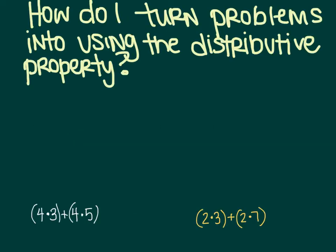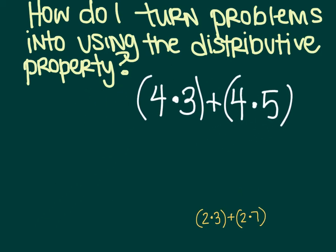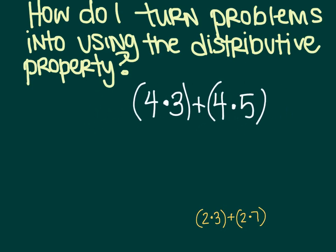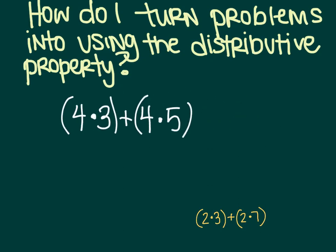How do I turn problems into problems using the distributive property? So what the distributive property is, is it's using multiplying and adding. So here we have a problem with multiplying and adding. Four times three plus four times five. And we're going to make it look like the distributive property, because right now it doesn't. What you're going to do is find the number that is repeated in both parentheses. So here I have a four and a four.